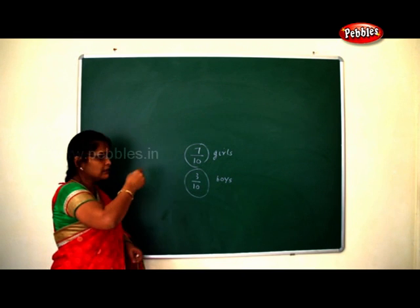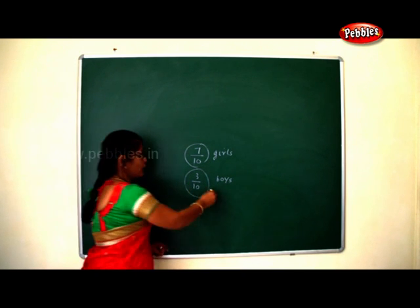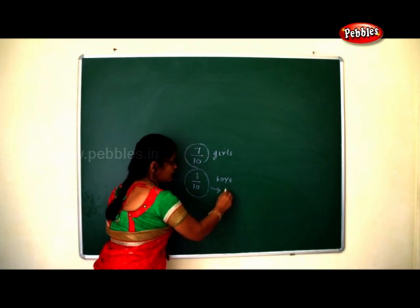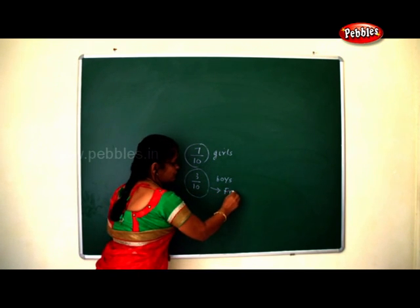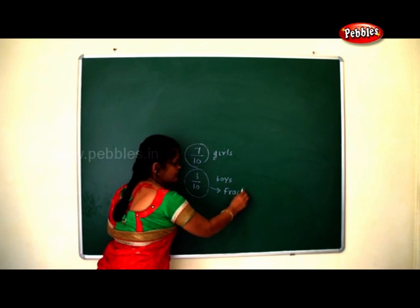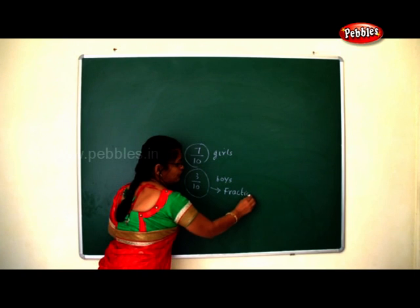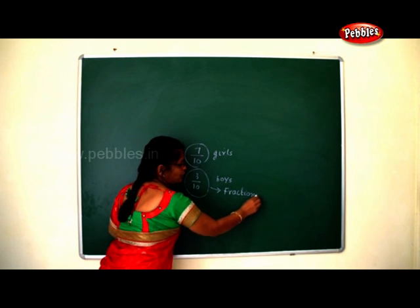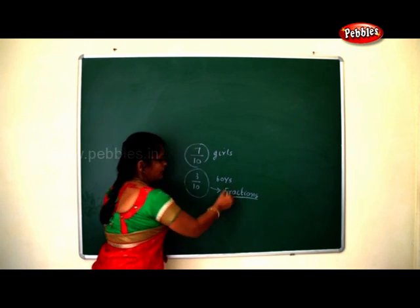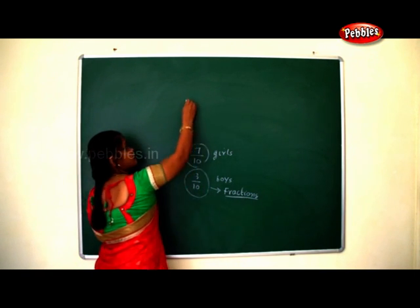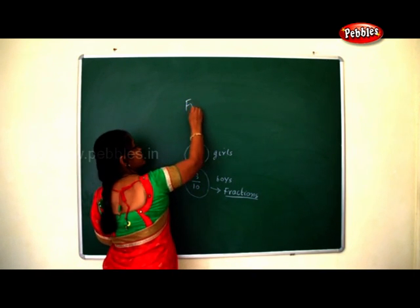So what is this seven by ten and three by ten? What do you call this? This is what you call a fraction. So this is the lesson we are going to start with today — Fraction.